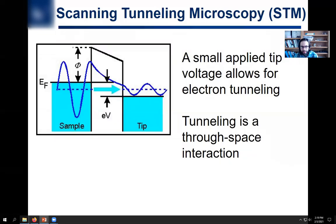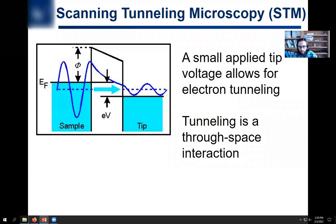In this video we're going to talk about STM, scanning tunneling microscopy. Like AFM, atomic force microscopy, it's a type of scanning probe microscopy used primarily to determine the topography of a sample, although it can give you some other information. At the end of the video we'll go over the advantages and disadvantages of STM versus AFM and why in some circumstances you might want to choose one technique over the other.